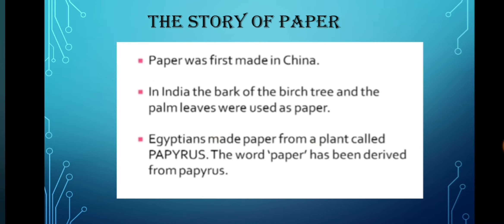Let's discuss about the story of paper. Paper was first made in China. In India, the bark of the birch tree and the palm leaves were used as paper. Egyptians made paper from a plant called papyrus. The word paper has been derived from papyrus.